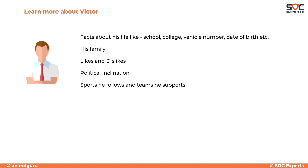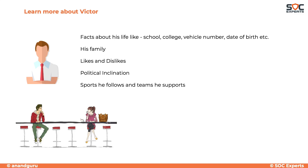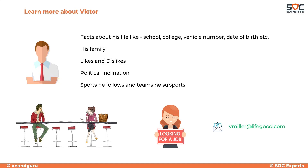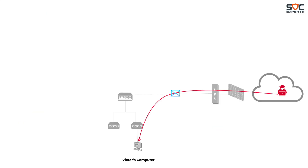With all this information, the attacker lures Victor using a bait. A woman named Maria bumps into Victor at a bar. Victor, being single, is interested in Maria and wants to impress her. At the end of the conversation Maria says she is new to town and looking for a job as an executive assistant. The attacker uses a legitimate job opportunity in the company, so Victor gives out his email address and asks Maria to send her resume. The attacker then uses that email address and background story to send a mail to Victor in the name of Maria.